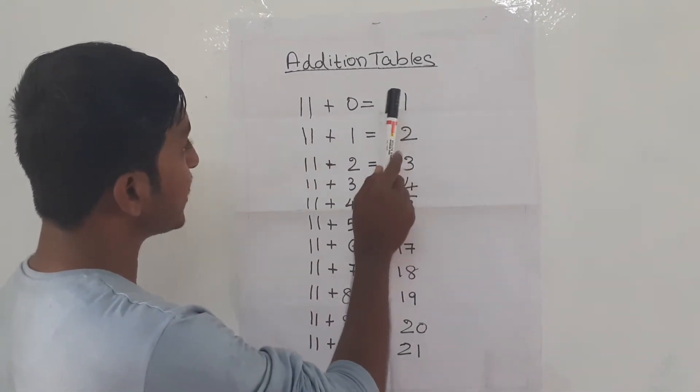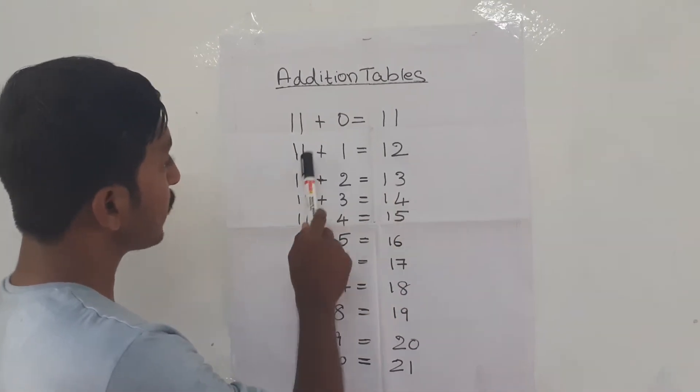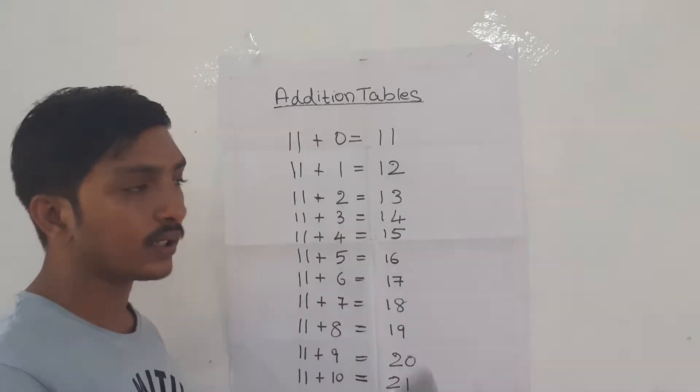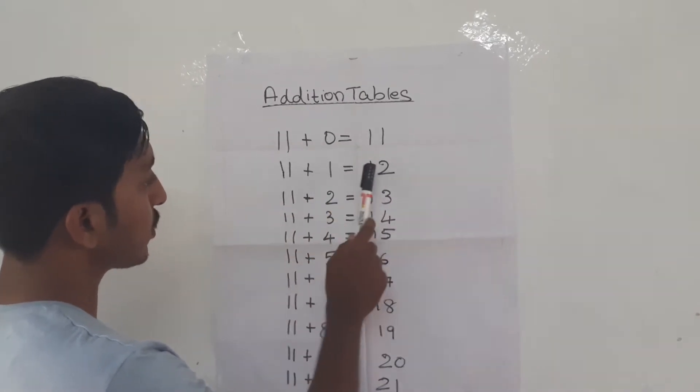So the 11 value will be the same, and 11 plus 1 equals 12. When 1 is added to any number, the value will be increased by 1. So 11 plus 1 equals 12.